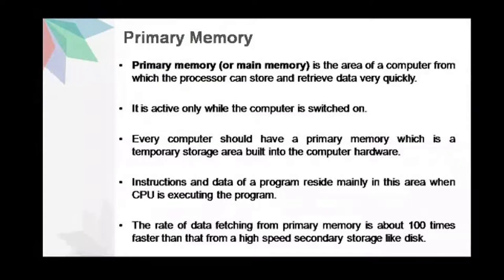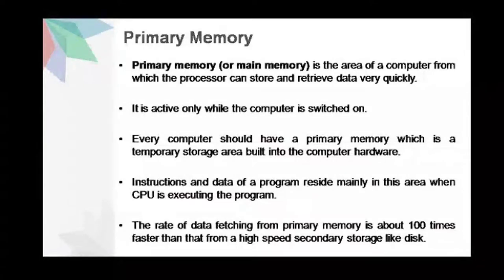The primary memory or main memory is the area of the computer from which the processor can store and retrieve data very quickly. It is active only when the computer is switched on. Every computer should have a primary memory, which is the temporary storage area built into the computer hardware. The instructions and data of a program reside mainly in this area when the CPU is executing the program.